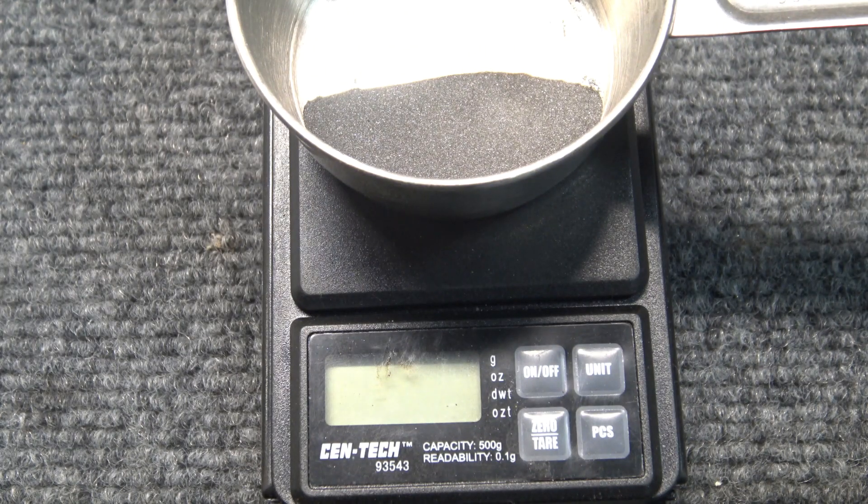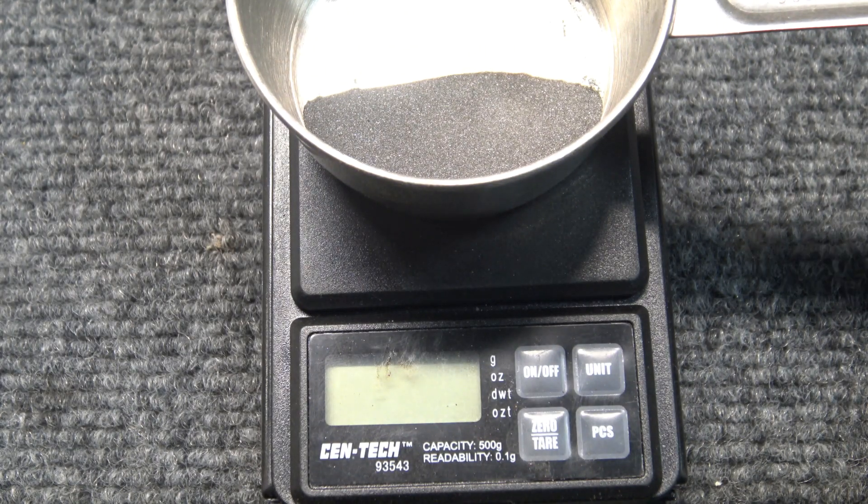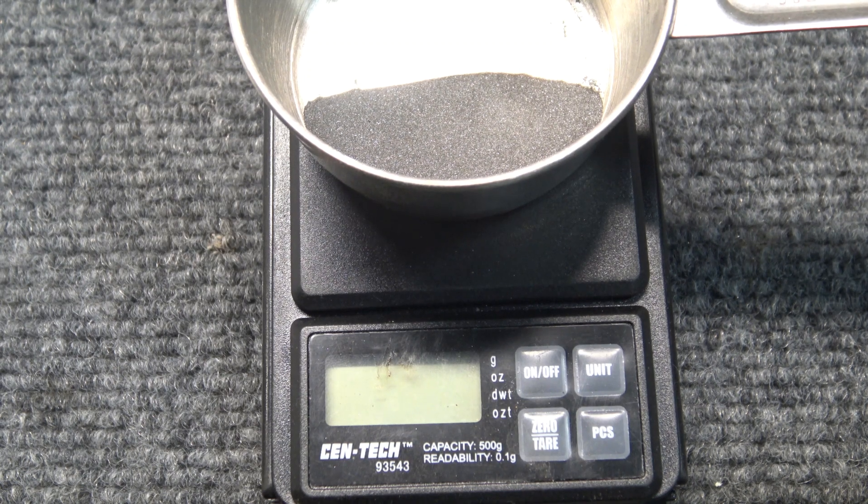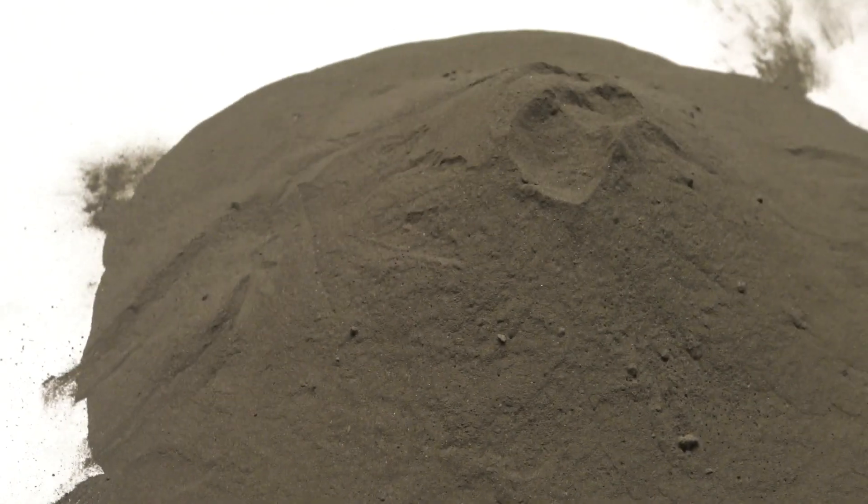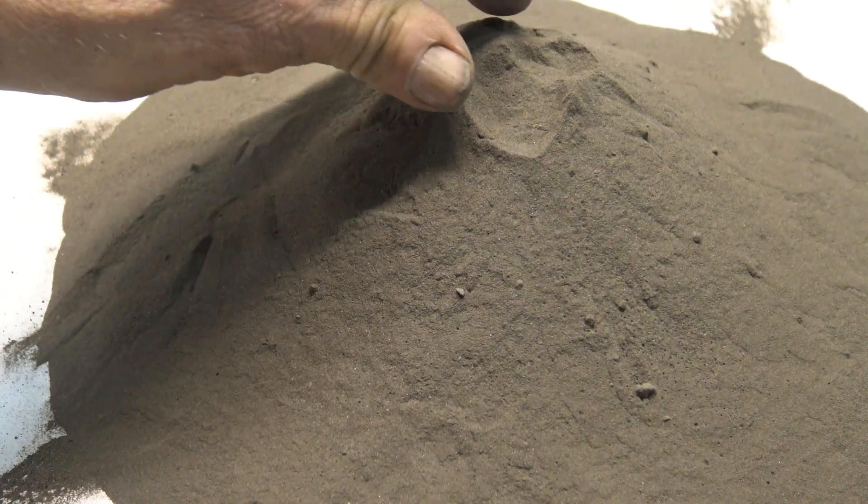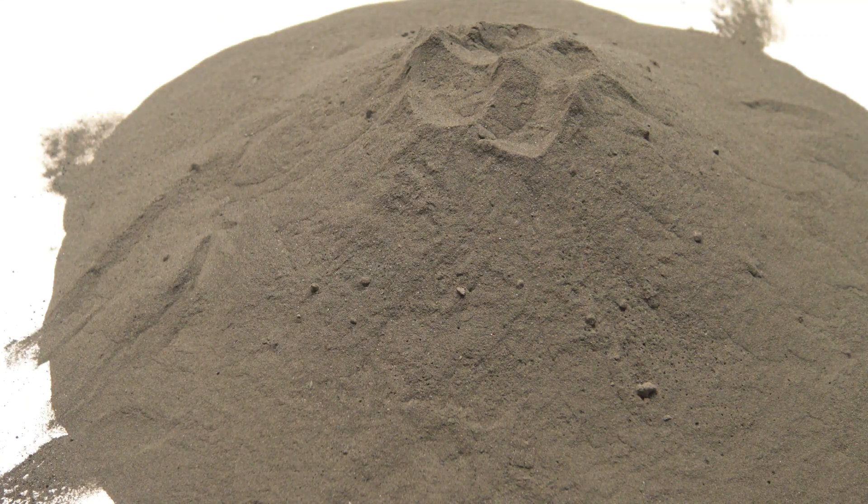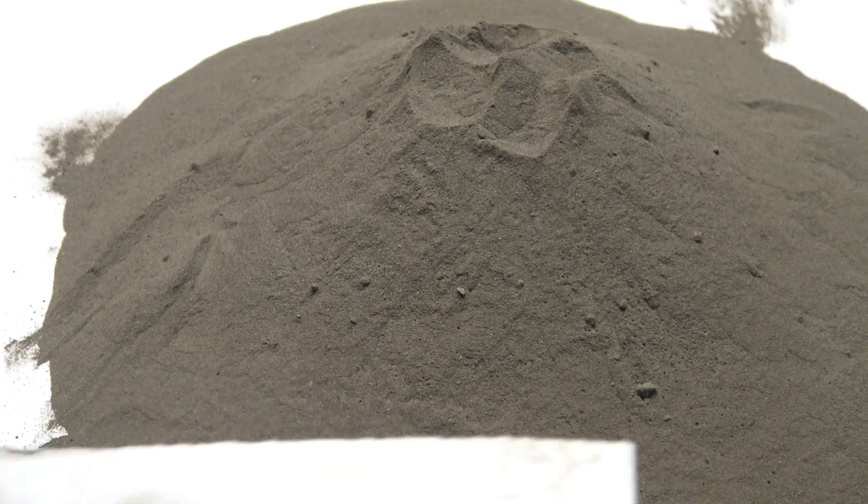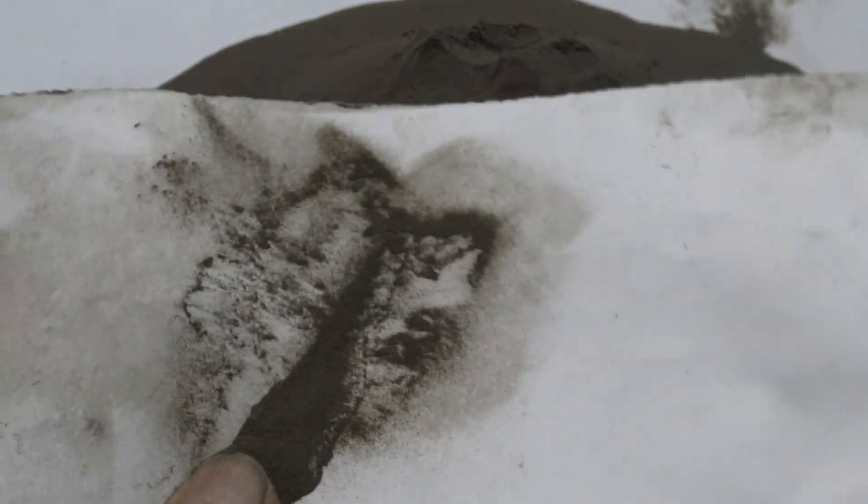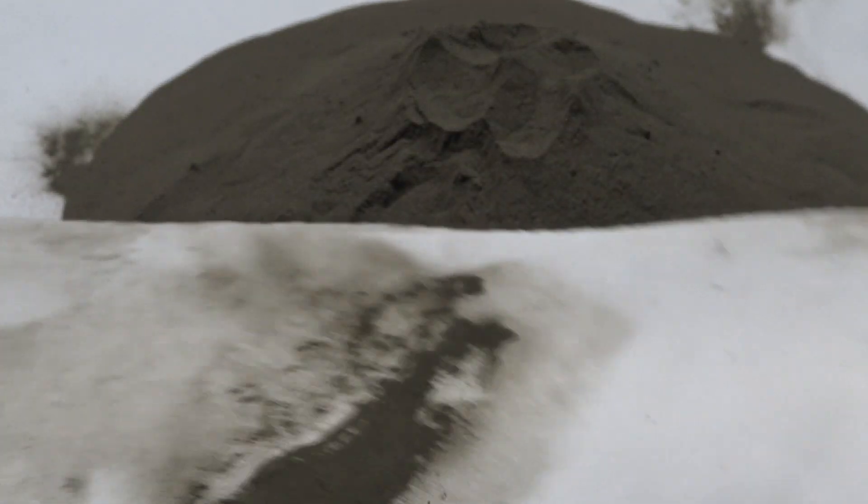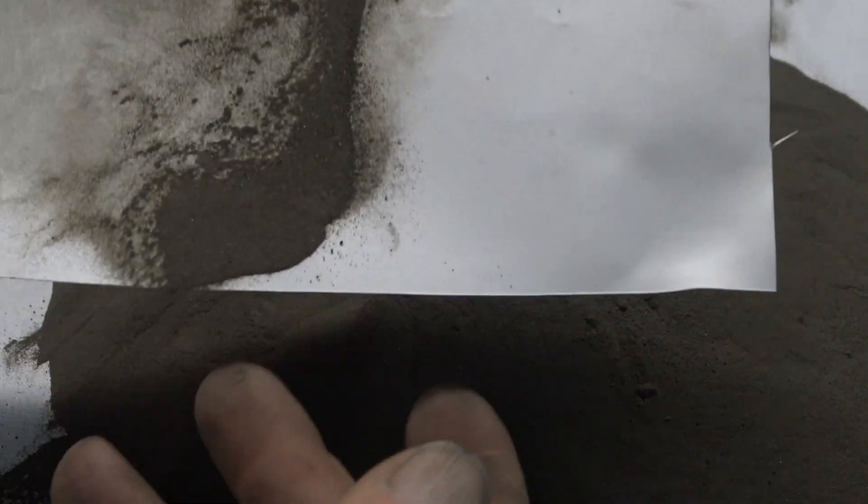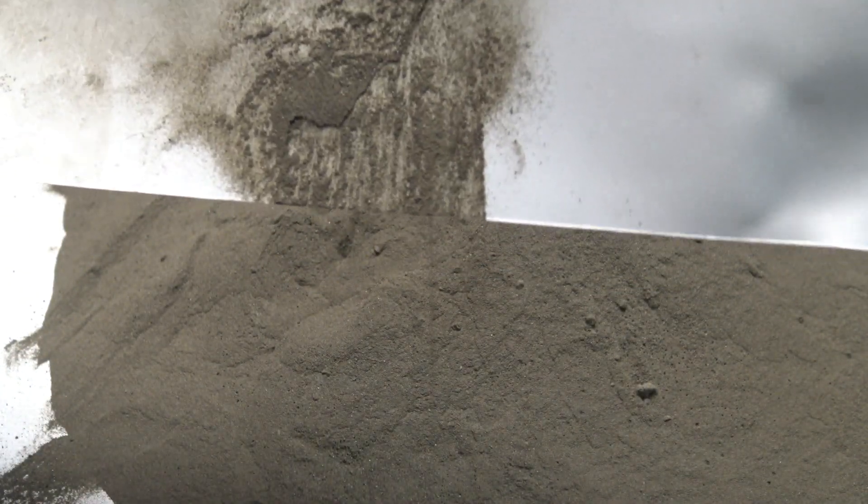So now I will take this one ounce of tungsten powder and I will add it to three pounds over here of this black sand dirt. To give you an idea what it looks like, this is 200 to 500 mesh material, very fine powder.